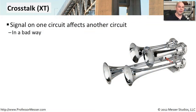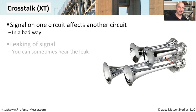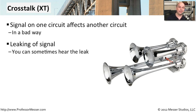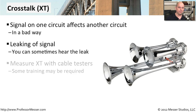One challenge when working with copper cables is something called crosstalk, abbreviated as XT. This is when a signal going across one wire causes interference on another wire — a leaking of the signal. If you've worked with analog connections, you may have picked up a phone and heard another signal along with the one you were supposed to hear. That is a good example of actually hearing crosstalk, as a signal leaks from copper connections into your connection.